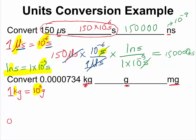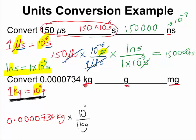So converting from kilogram to gram is very straightforward since I now know the conversion factor. If I have 0.000000734 kilograms, I can easily convert it to grams by multiplying by my conversion factor, written in such a way that kilograms cancel out. I have essentially completed the conversion from kilograms to grams, and my calculator gives me 0.000734 grams.